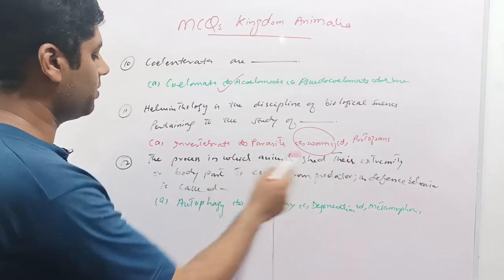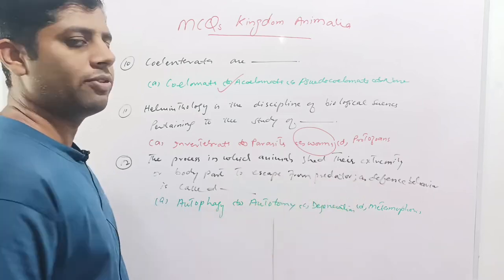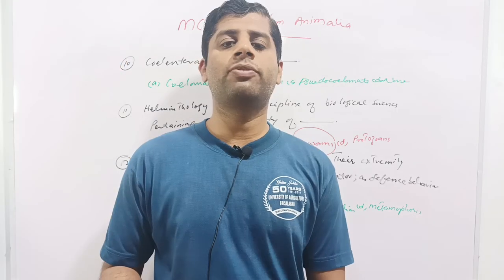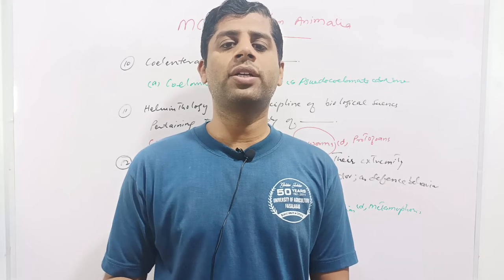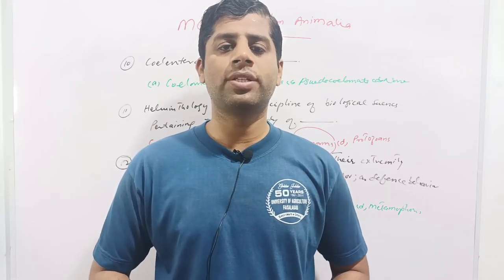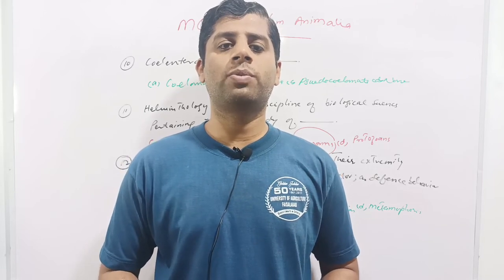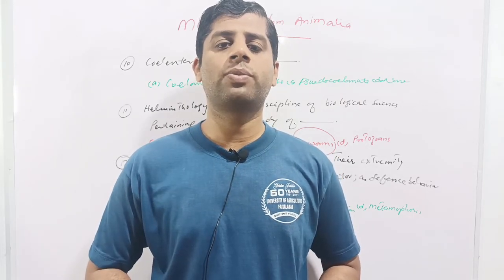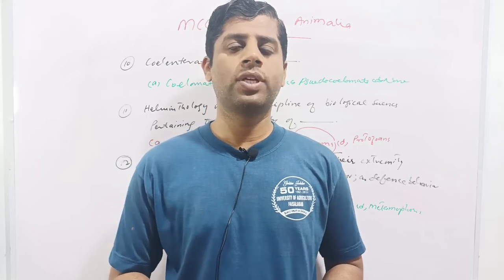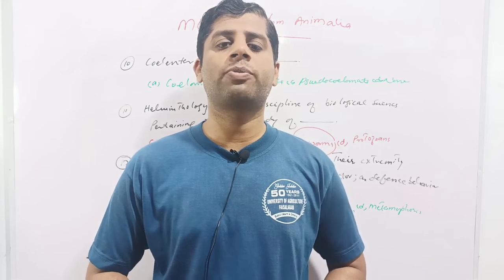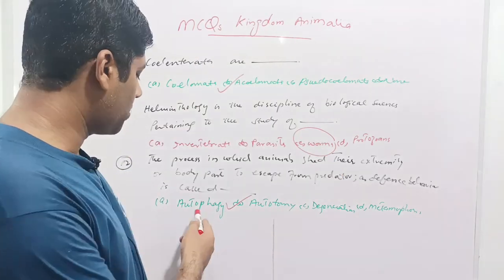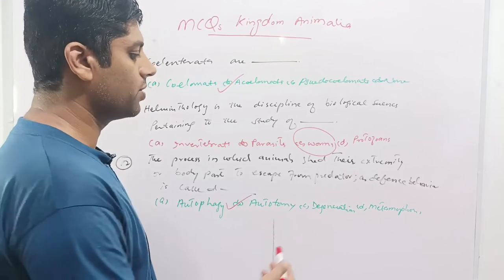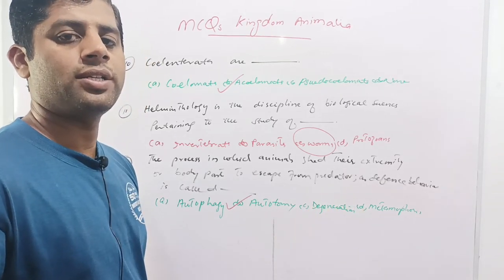The process in which animals shed their extremity or body part to escape from a predator as defensive behavior is called: autophagy, autotomy, degeneration, or metamorphosis. For example, lizards throw away or shed their tail when faced with hostility. This defensive mode is seen in several phyla — shedding peripheral parts like the tail confuses the predator, allowing the animal to escape. This phenomenon is called autotomy; auto means self and tomy means cutting. Autophagy is a lysosomal property that destroys the cell's own body. Metamorphosis is the developmental process by which larval stages attain adult shape. Option B is correct.